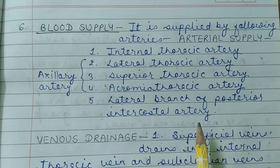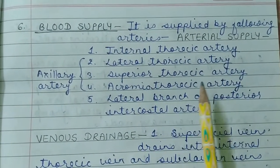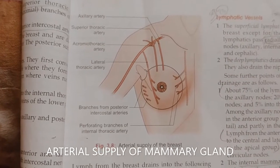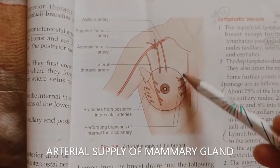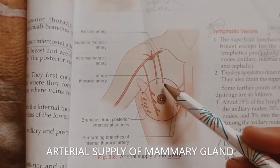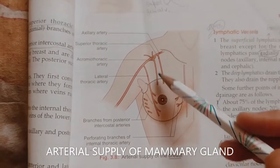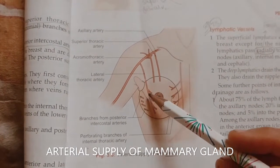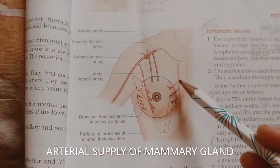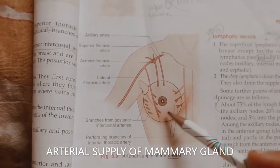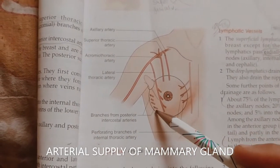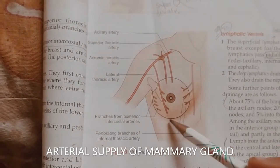The arterial supply includes the lateral branch of the posterior intercostal artery; lateral thoracic artery, superior thoracic artery, and acromiothoracic artery — which are branches of the axillary artery. The internal thoracic artery supplies via its perforating branches, and the posterior intercostal artery branches also supply the mammary gland.